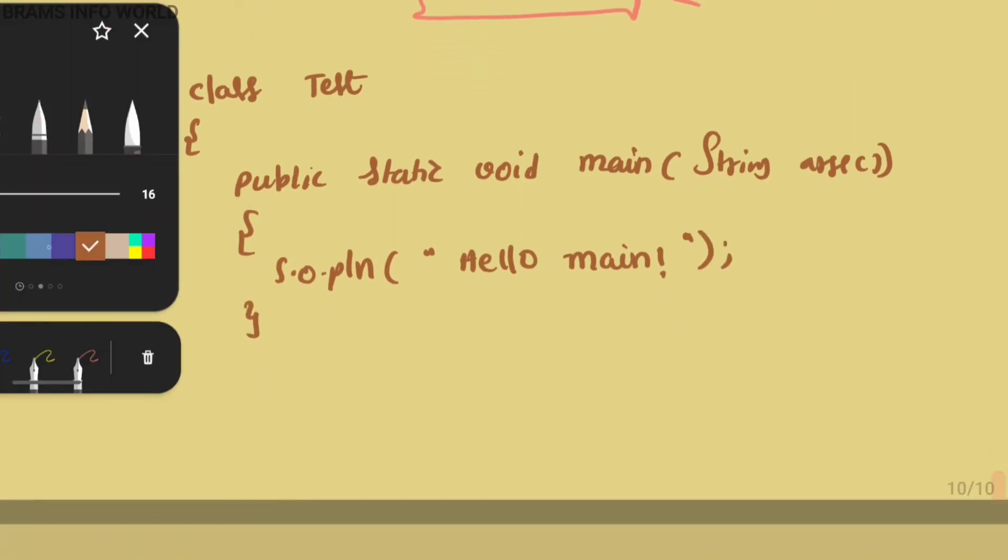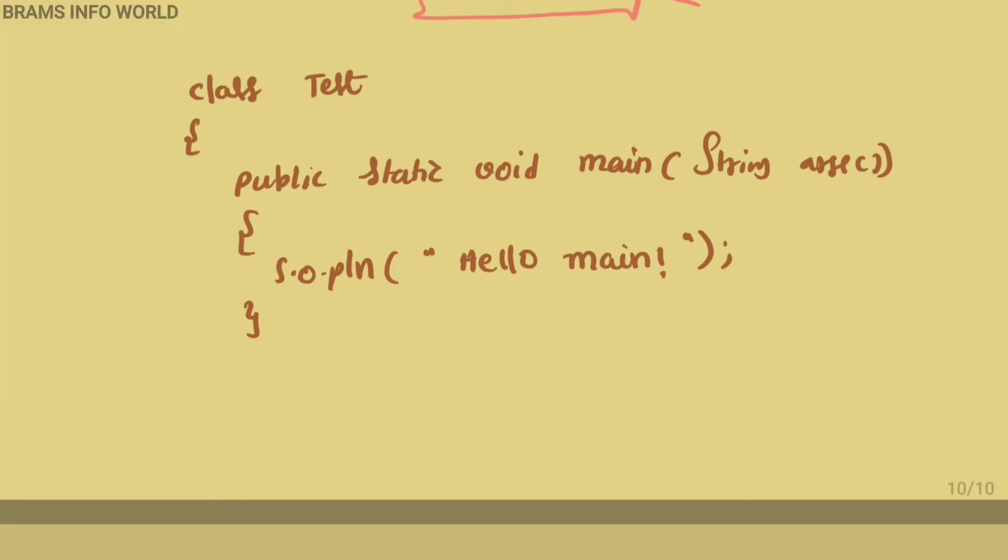And I want to define static block. So I define static in parentheses, system.out.println hello static. This is my program.